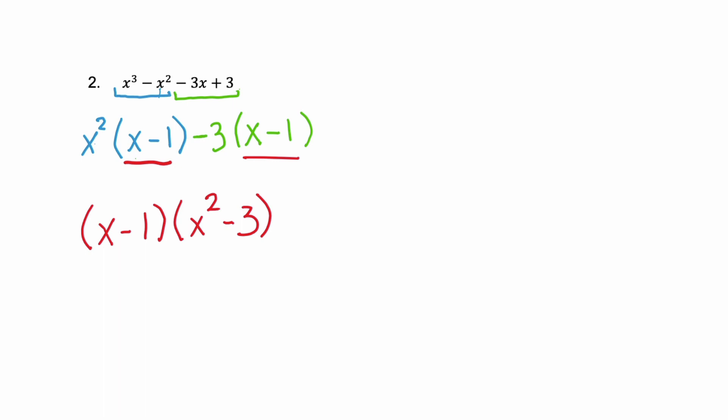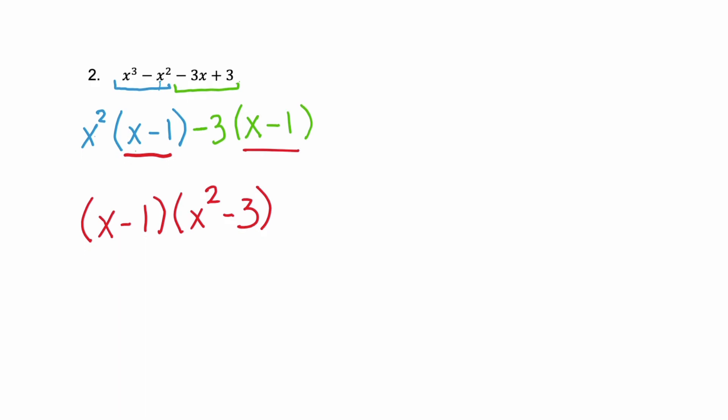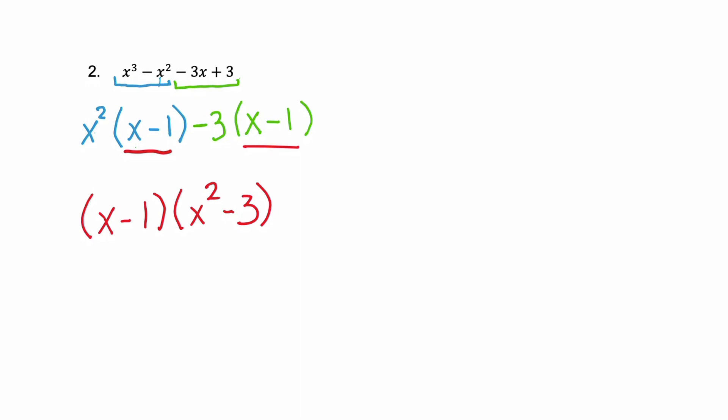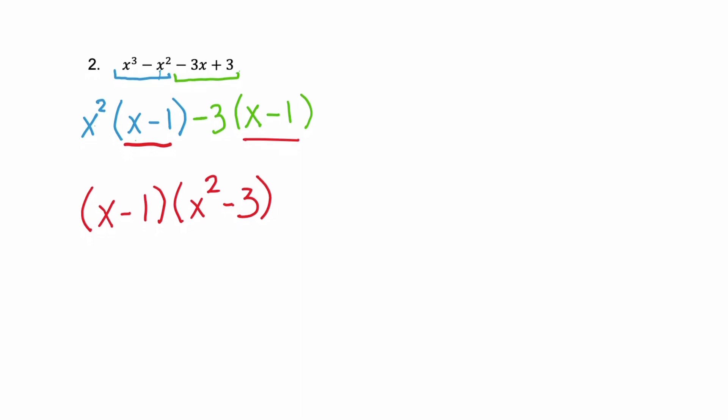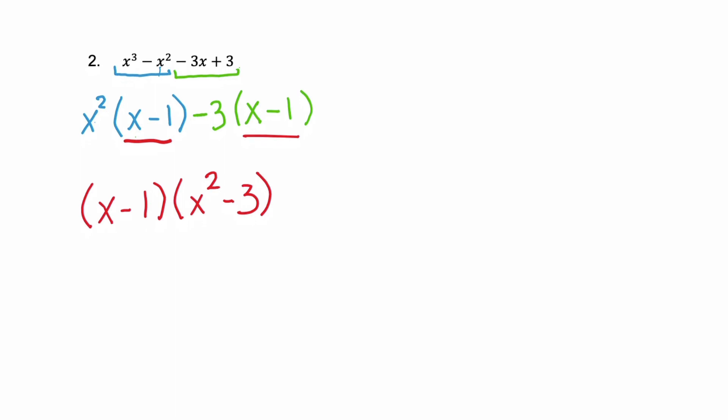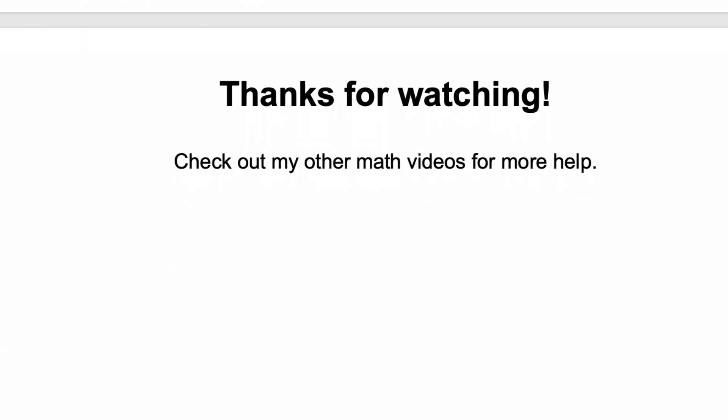So the big takeaway, if you see a polynomial with four terms and you need to factor it, grouping. Factor by grouping. And the ordering doesn't matter. Group the first two terms together. Find the GCF factor. Use that factor to help you determine how to factor the second grouping if you see that it's a little tricky. Thank you for watching. I hope you found this video helpful. And if you did, I hope that you will go check out my other math videos for more help.